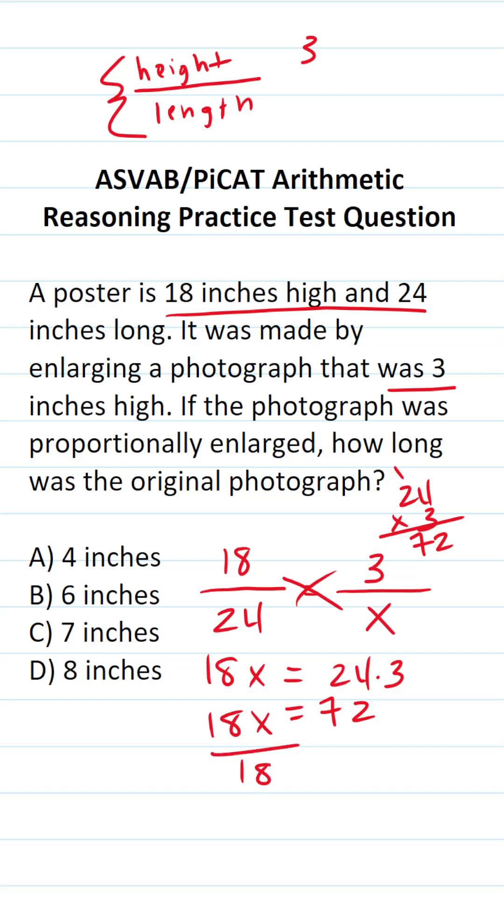18x - we're solving for x, so we're going to divide both sides by 18. This says x equals 72 divided by 18, which is 4. So no matter how you solve this one, you can see that you get the same answer.